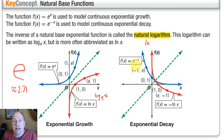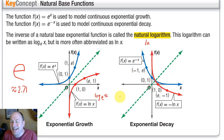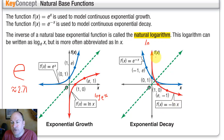For exponential decay, e^(-x) looks like the blue curve on the right, continuously decreasing as we move towards positive infinity. Its inverse, also with the base of e, is the function f(x) = negative the natural log of x.